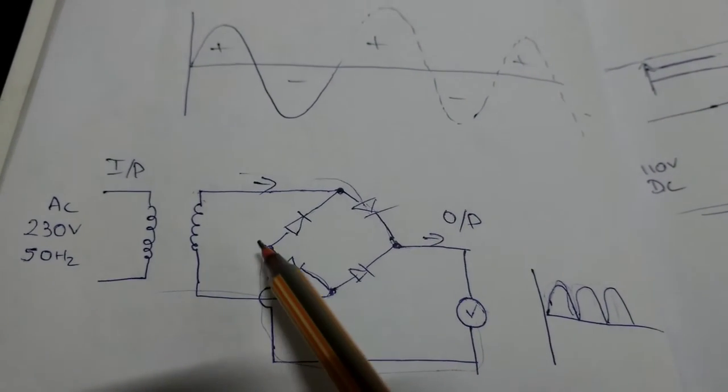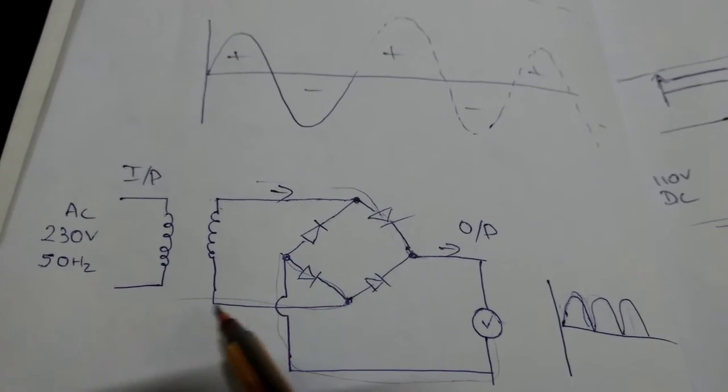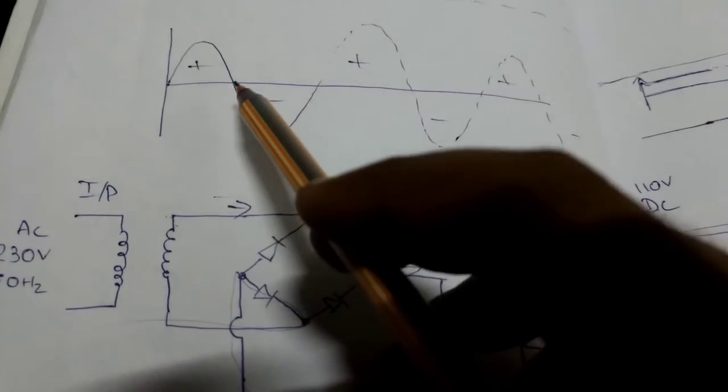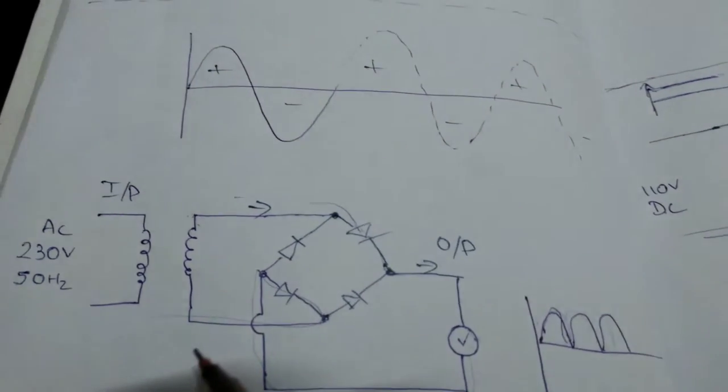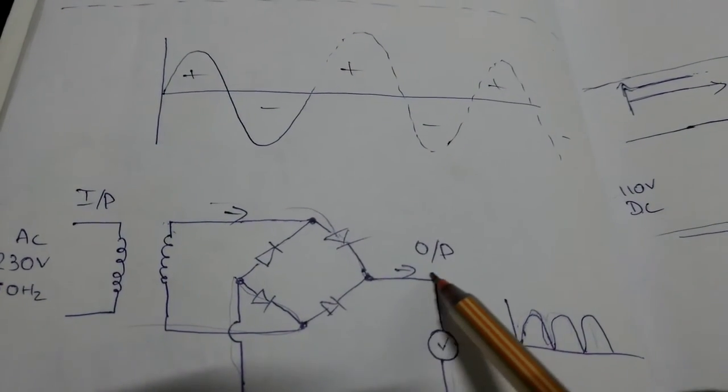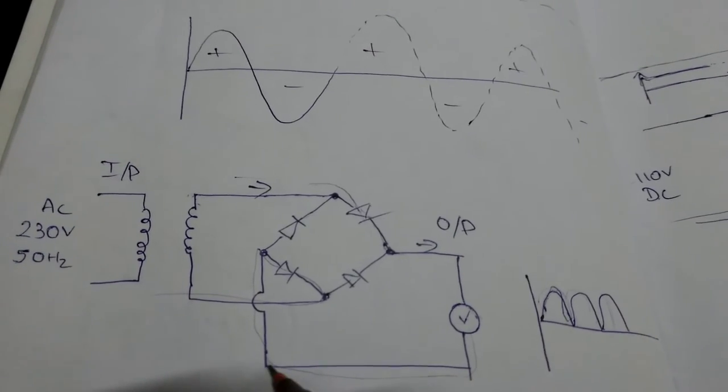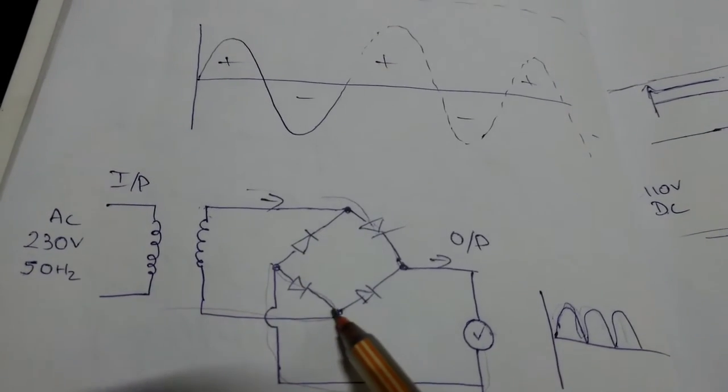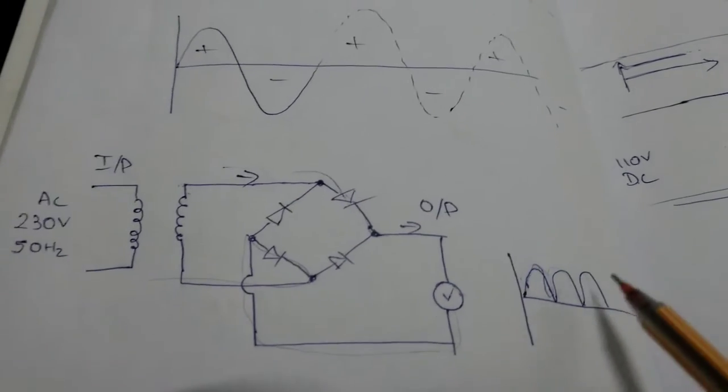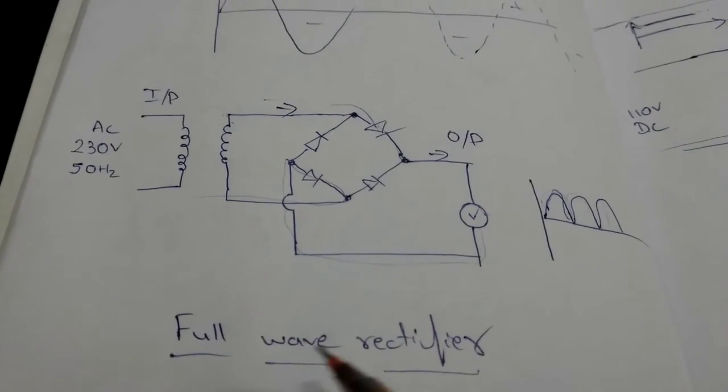For the positive cycle the circuit will go like that and you will get a positive ripple. Now when the voltage shifts through the negative cycle the current will go from here. It will go here and the circuit will be completed like this way. So you will get an output like that. This is what exactly happens in a mobile charger.